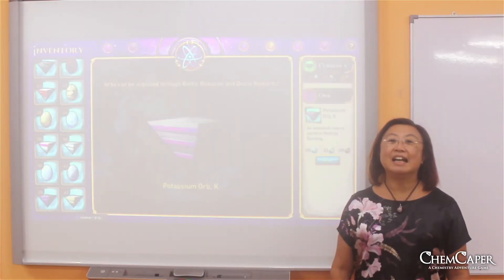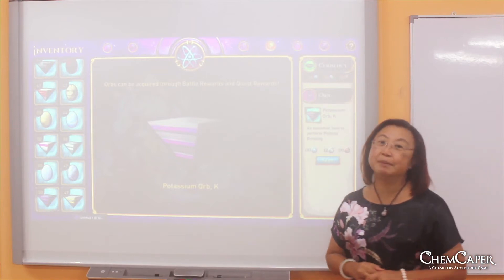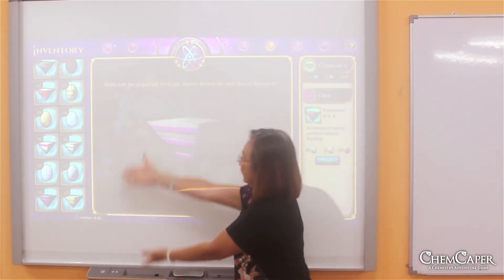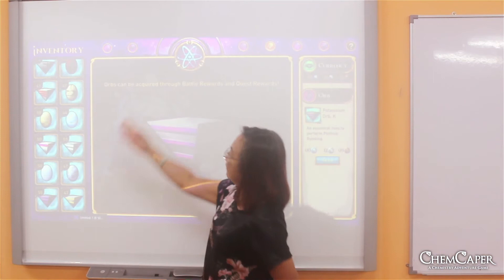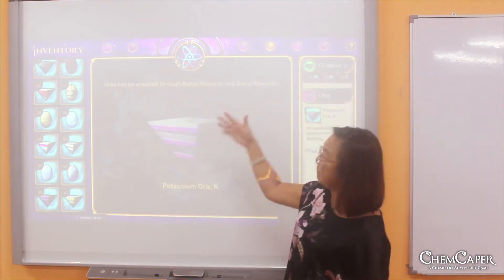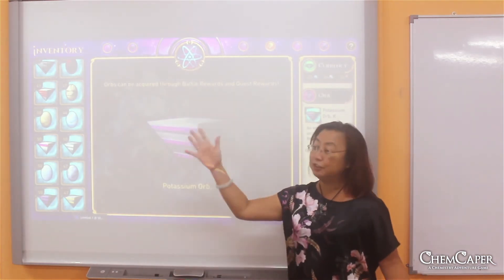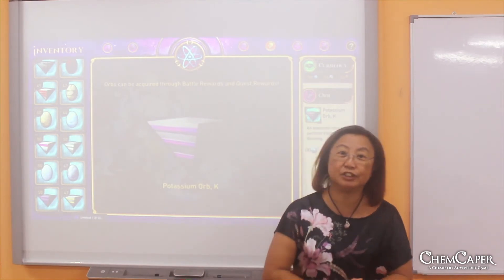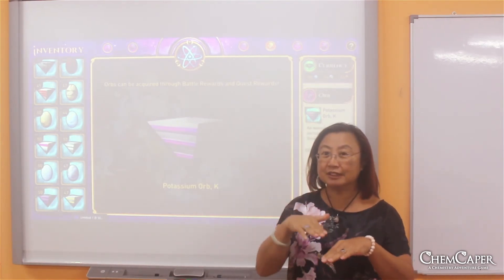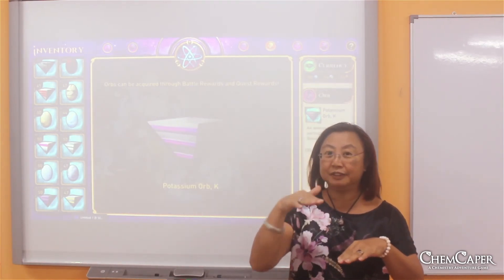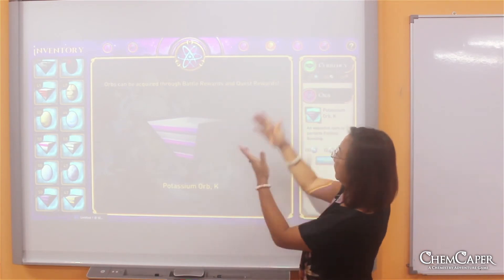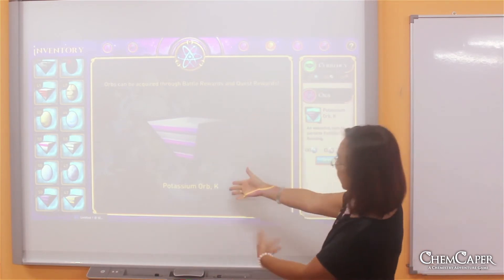One of the items that needs to be collected in ChemCaper is orbs. You can see the design of the orbs here, and most of them have bands on them. The number of bands actually represents the number of filled electron shells, and that helps students figure out where they are in the periodic table. An example of this is the potassium orb.